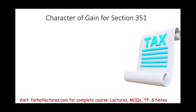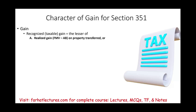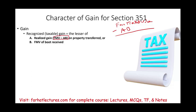Now let's look at the character of the gain and how to compute it. You want to know this formula: how much of the gain am I going to recognize — in other words, how much is taxable? The recognized gain will be the lesser of the realized gain or the fair market value of boot received. The realized gain is computed as the fair market value of the item minus the adjusted basis.